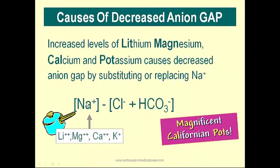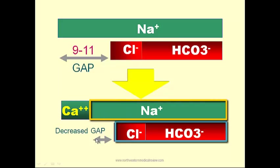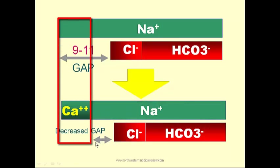You subtract the measured anions from measured sodium, and you see that the gap is decreased. For instance, in that patient I had hypercalcemia. It takes a little space away from sodium. You subtract bicarb plus chloride from sodium, and you're going to see that the gap is decreased by this much.